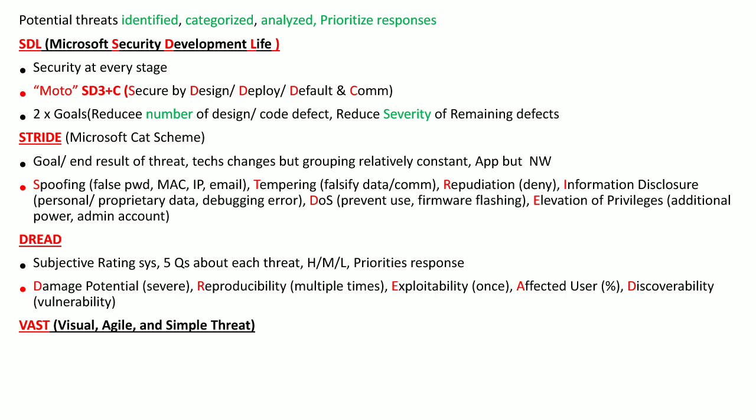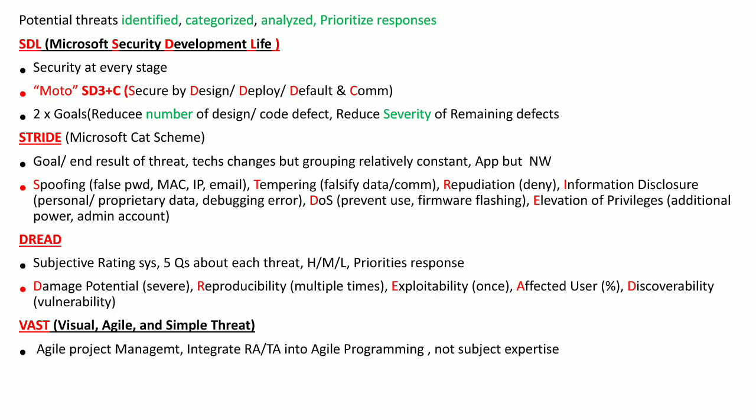The next threat modeling is VAST — Visual, Agile, and Simple Threat modeling. It covers threats against agile project management and agile programming, integrating risk and threat analysis into the agile process. One key advantage is that it does not require a subject matter expert to perform this threat modeling.